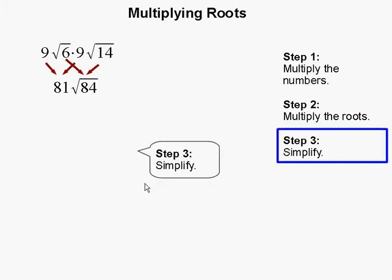Step 3: Simplify. We should always simplify our roots whenever we can. Now 84 can be split up into 4 times 21, and we can apply the root to the separate numbers.